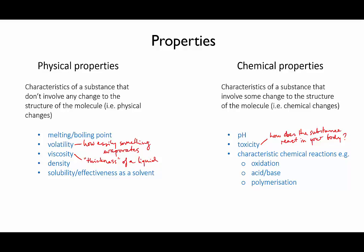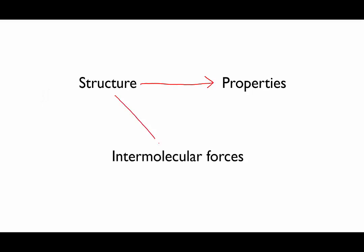So what is it that makes one substance have a different boiling point to another? It is the structure of the molecule that defines all its properties. The types of atoms and the way they're joined together determines how the molecule behaves. Why is this? Well, it all comes down to intermolecular forces.